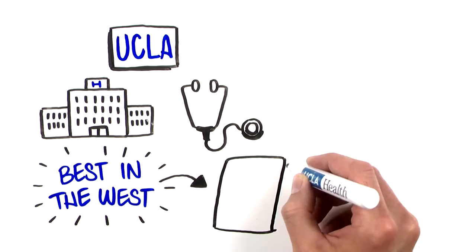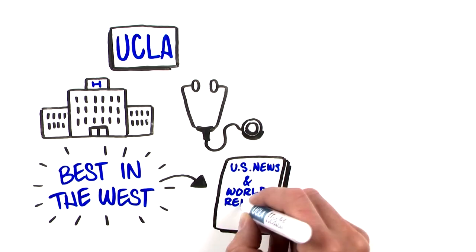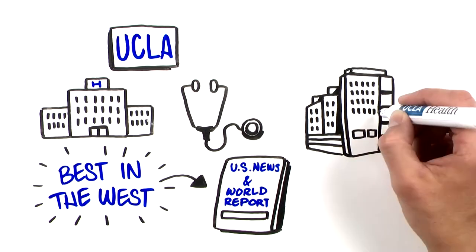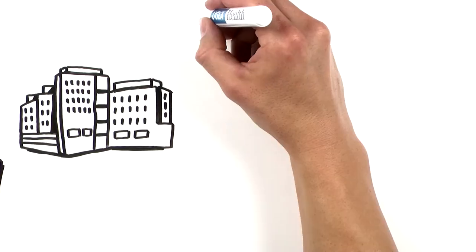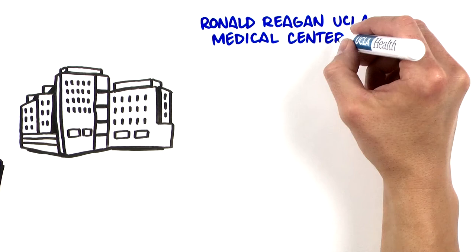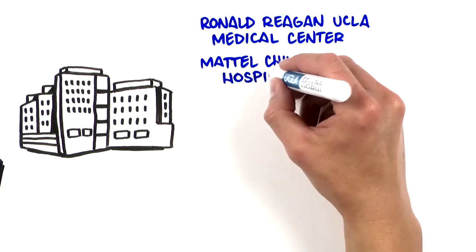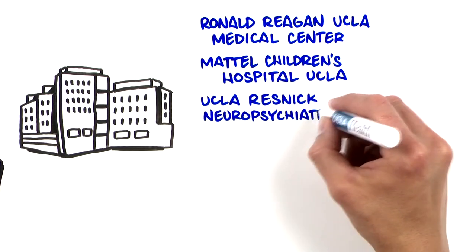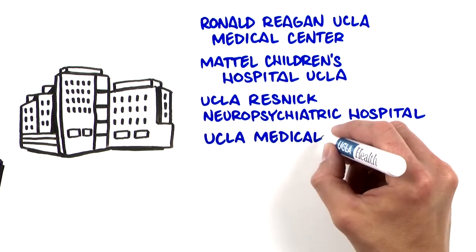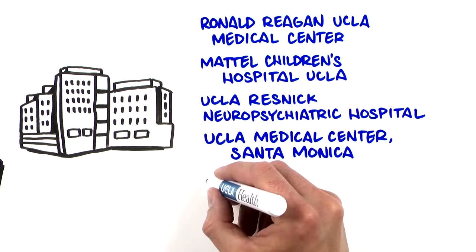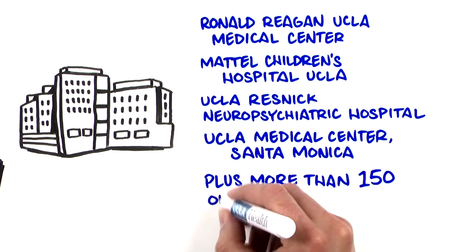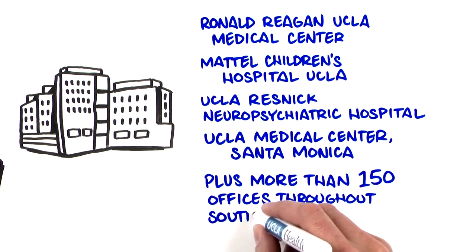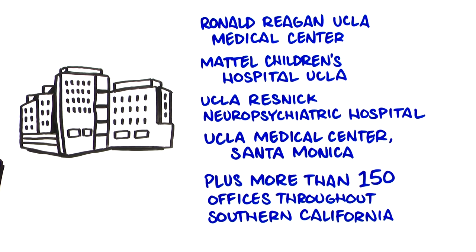UCLA Health is now number three in the nation as ranked by U.S. News & World Report and includes Ronald Reagan UCLA Medical Center, Mattel Children's Hospital UCLA, the Resnick Neuropsychiatric Hospital at UCLA, UCLA Medical Center Santa Monica, and more than 150 primary and specialty care offices throughout Southern California.